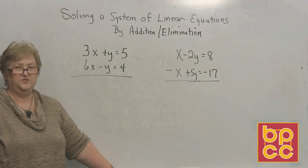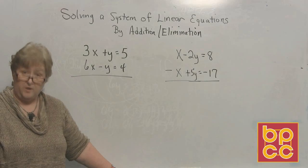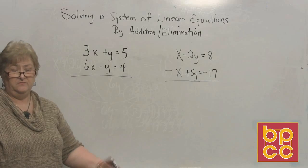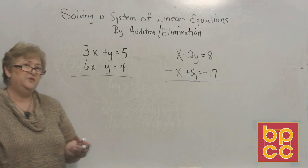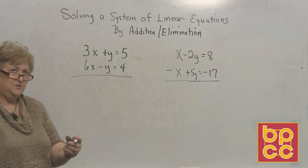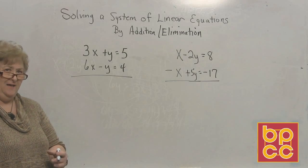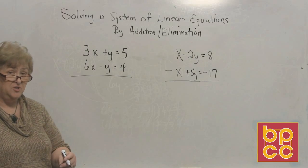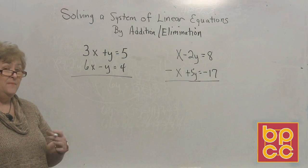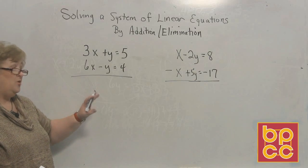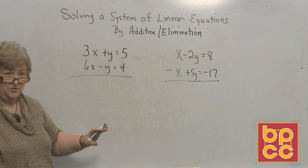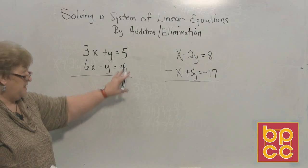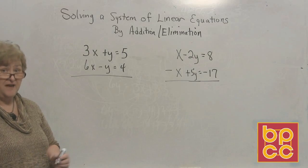The third way we're going to solve a system of linear equations with two variables is using the addition or elimination method — you hear it both ways. What we're going to do is attempt to force an x or a y to clear out so we can solve for the other variable, then use substitution. My preference is to have equations in x, y, equals, number format. I've put these in that format and we're going to add.